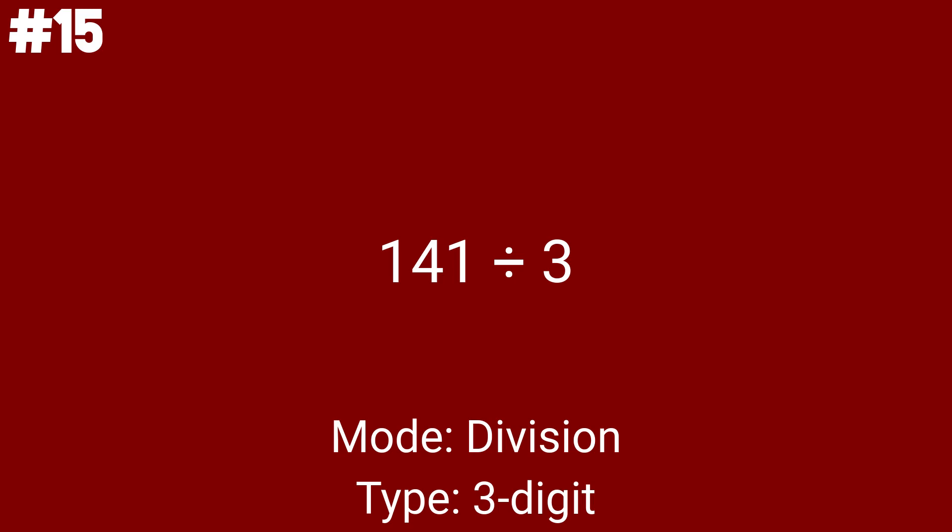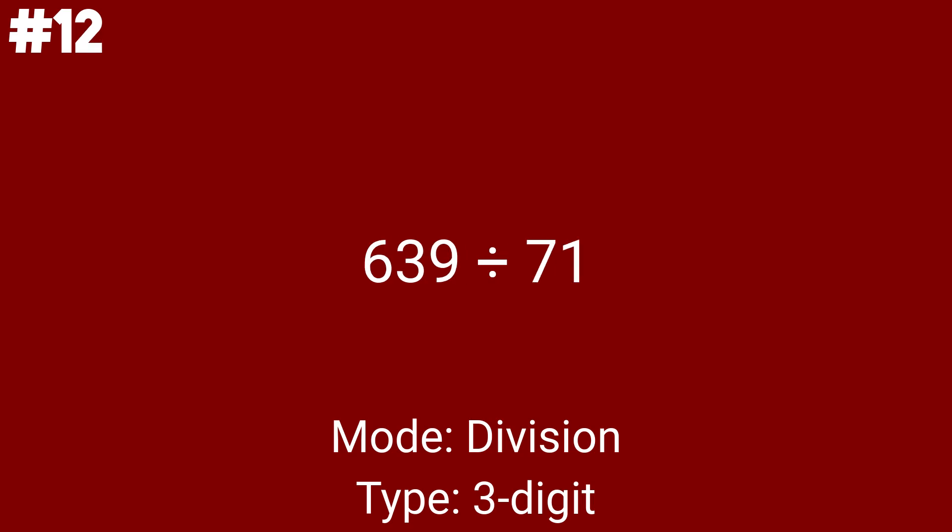This is the 41st problem overall. 581 divided by 7 is the 42nd problem of the day — but seriously, it's the answer to the meaning of life. Going back to the arithmetic topic, we have 13 problems to go. 810 divided by 5 is the 43rd math problem, and we have to divide by 5 to solve this. The following division problem is a bit harder: 639 divided by 71, the twelfth to last division problem, problem number 44. The 2-digit divisor makes things more complicated than with 1 digit.